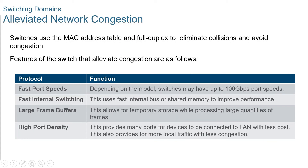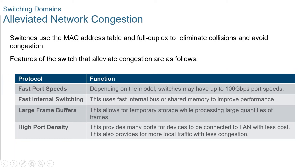LAN switches have special characteristics that help them alleviate network congestion. By default, interconnected switch ports attempt to establish a link in full duplex, thereby eliminating collision domains. Each full-duplex port of the switch provides the full bandwidth to the connected devices. Full-duplex connections have dramatically increased LAN network performance and are required for 1 Gbps Ethernet speeds and higher. Switches interconnect LAN segments using a MAC address table to determine egress ports and can lessen or eliminate collisions entirely.